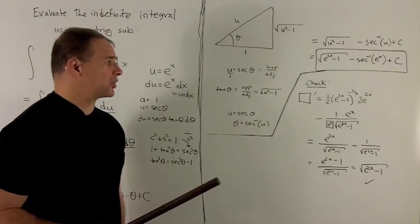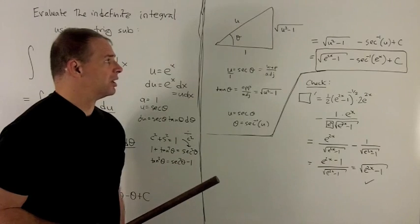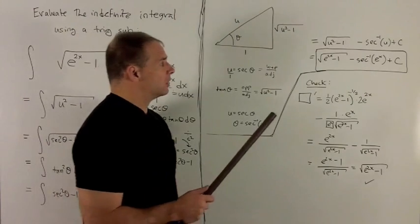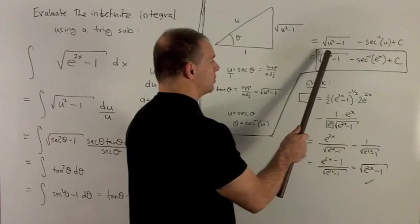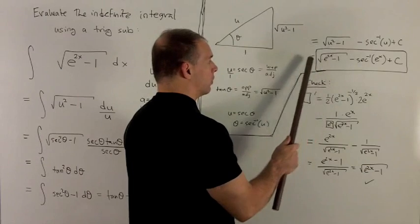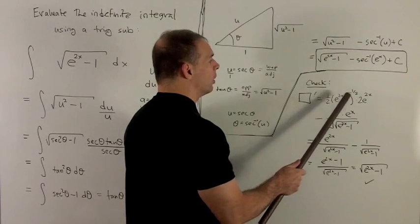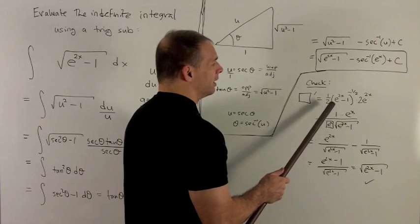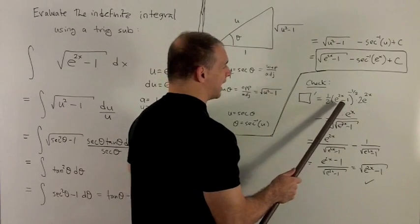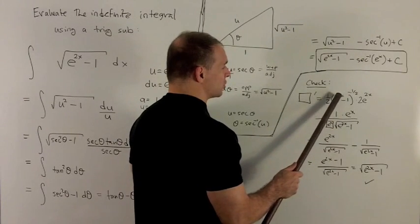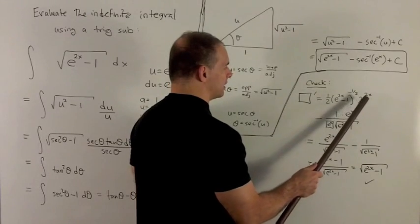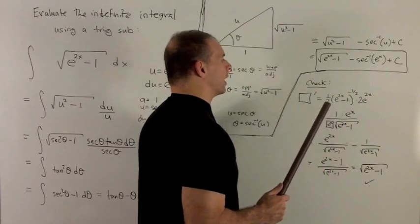Of course, we're going to check our answer to make sure we didn't make any mistakes. So this is e to the 2x minus 1 to the 1 half. I'm going to take its derivative, so the half comes down, 1 comes off the exponent, and we multiply by the derivative of the inside. Derivative of e to the 2x is you rewrite e to the 2x, then take the derivative of the top, which brings a 2 down.